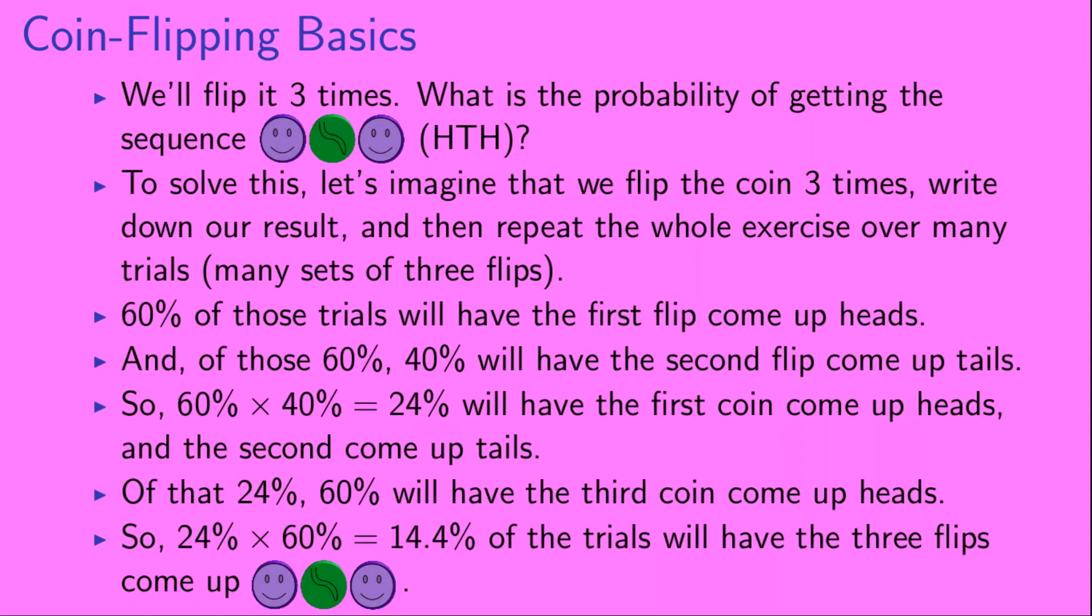So let's flip this coin three times. What is the probability of getting the sequence heads, tails, heads? To solve this, let's imagine that we flip the coin three times, write down our result, and then repeat the whole exercise over many trials, so many sets of three flips.